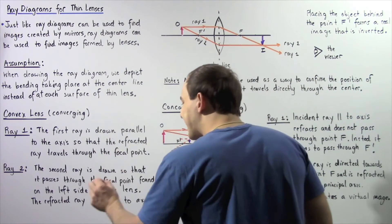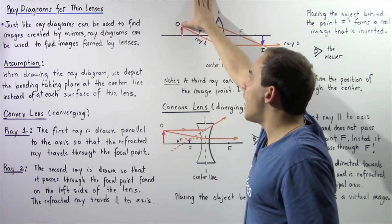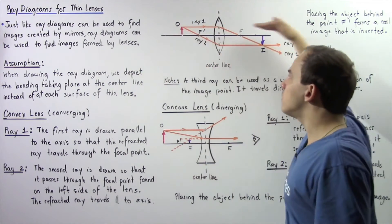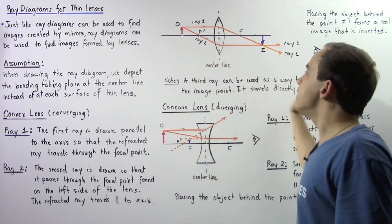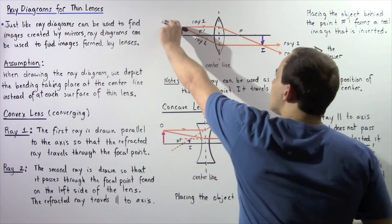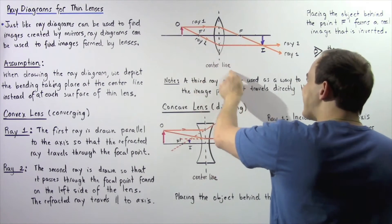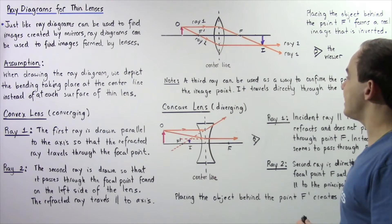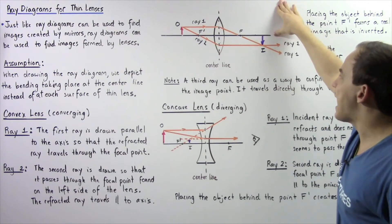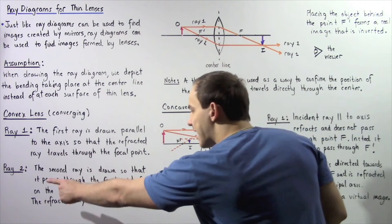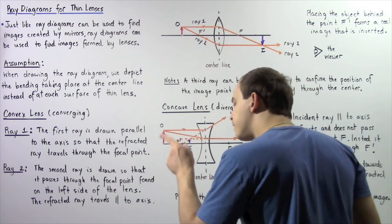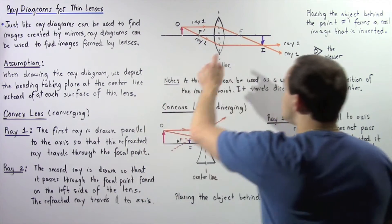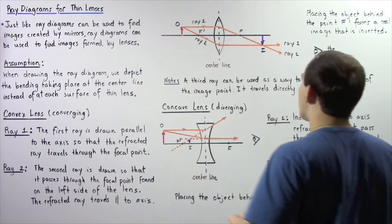Ray number two begins at the same exact object point. Instead of being parallel, it goes directly through focal point F1 found on the left side of our lens. It follows a straight path, and eventually when it hits the center line, it refracts and bends so that the refracted ray is parallel to our principal axis. So the second ray is drawn passing through focal point F1 on the left side, and the refracted ray is parallel to the principal axis.